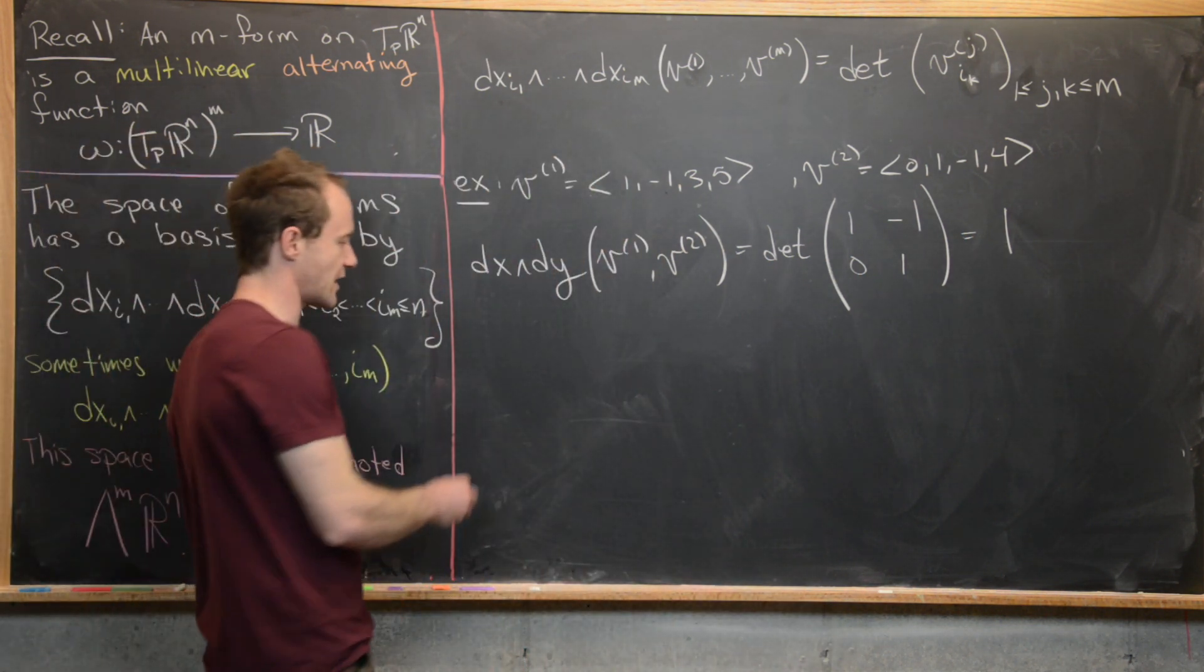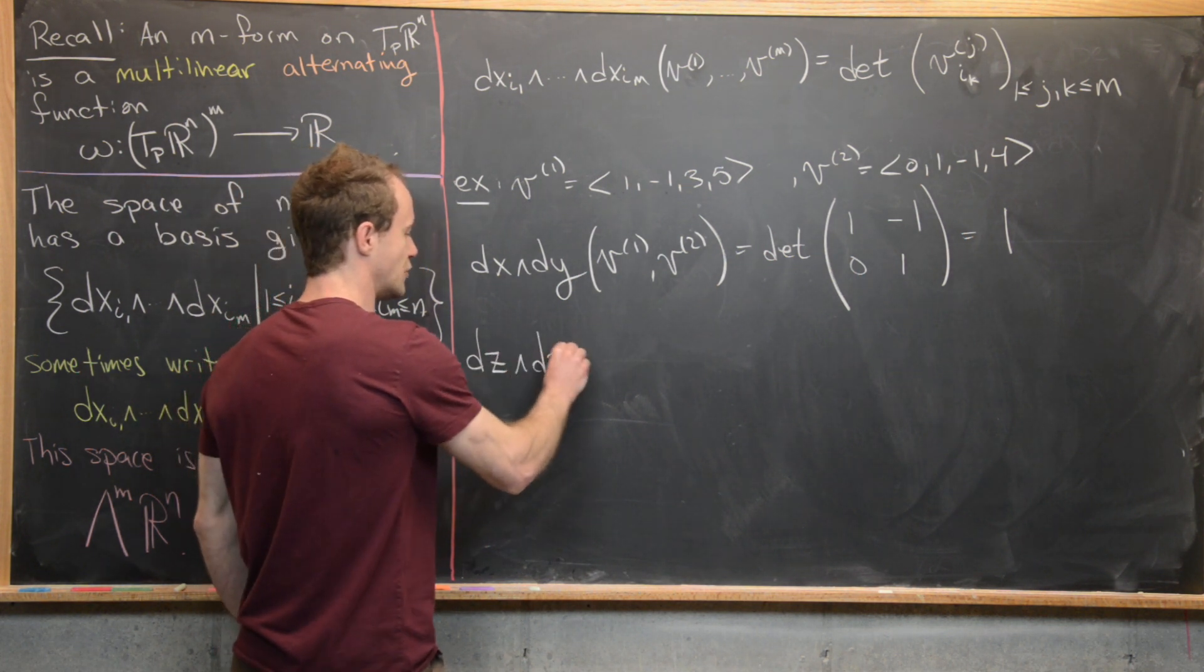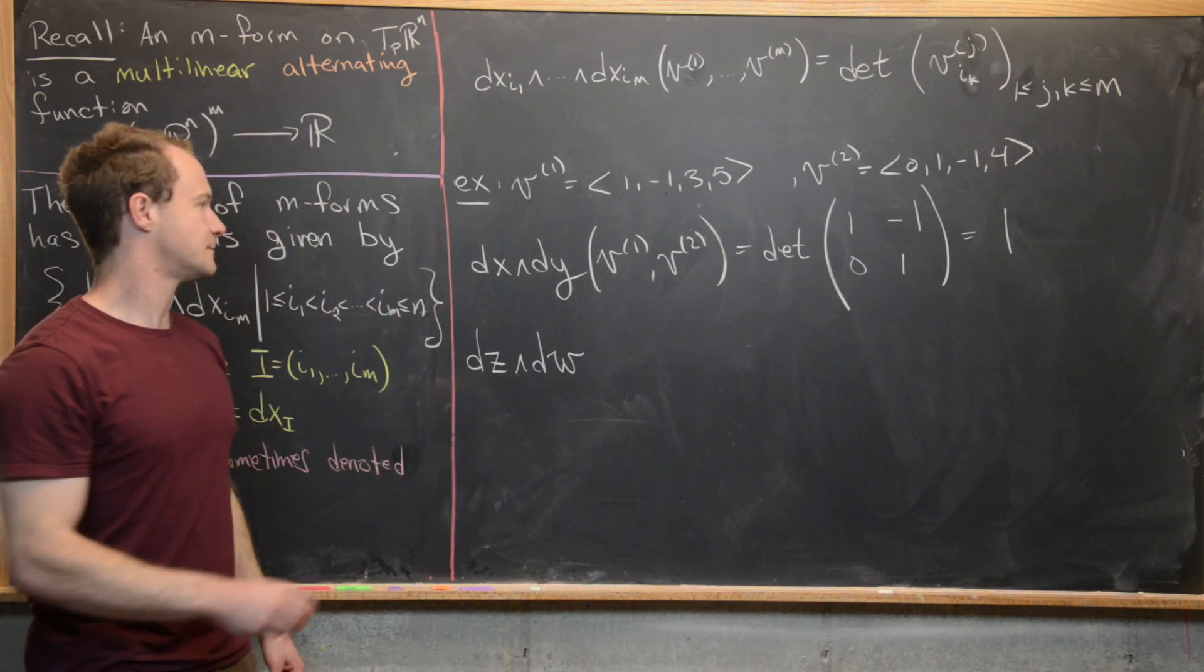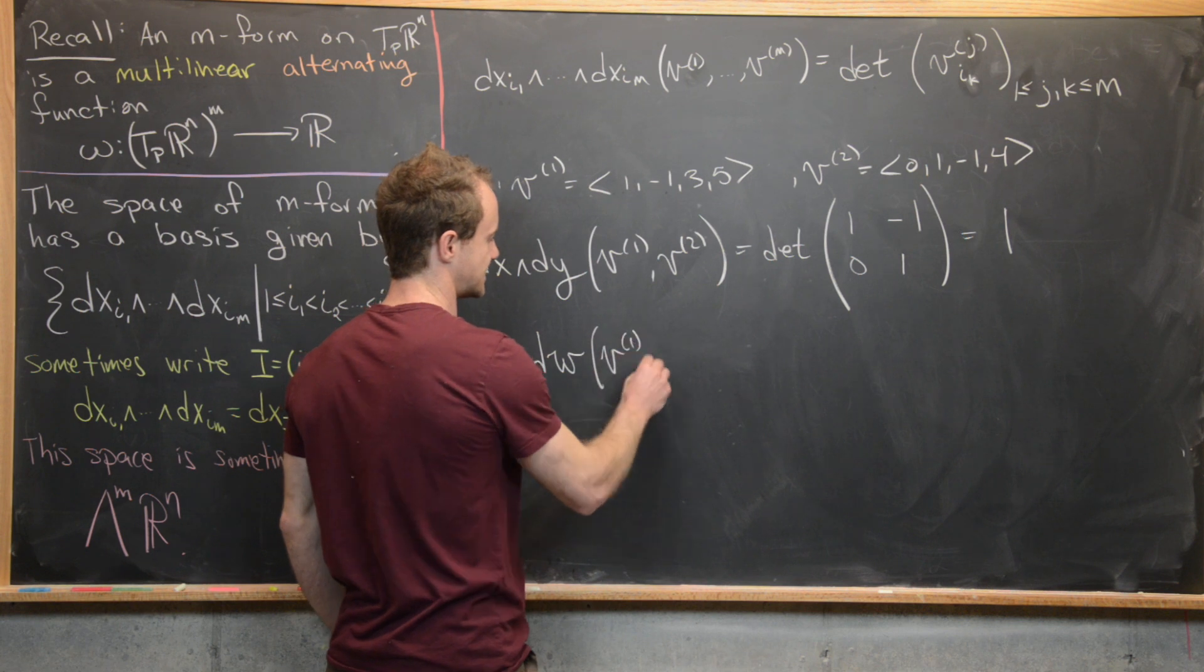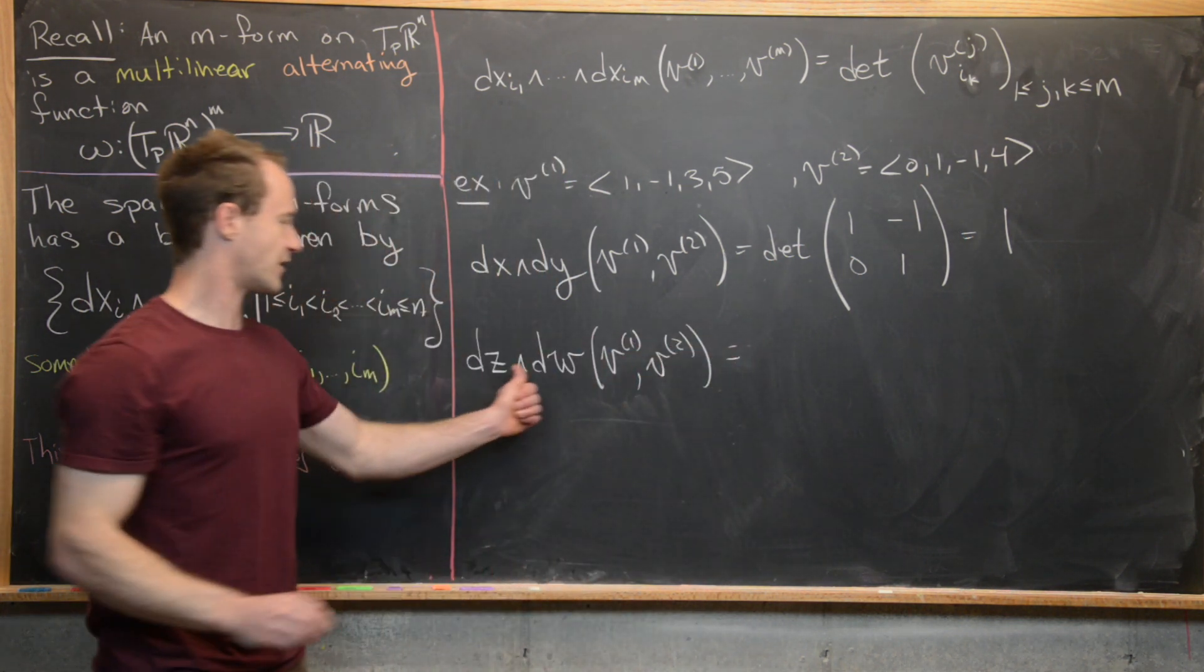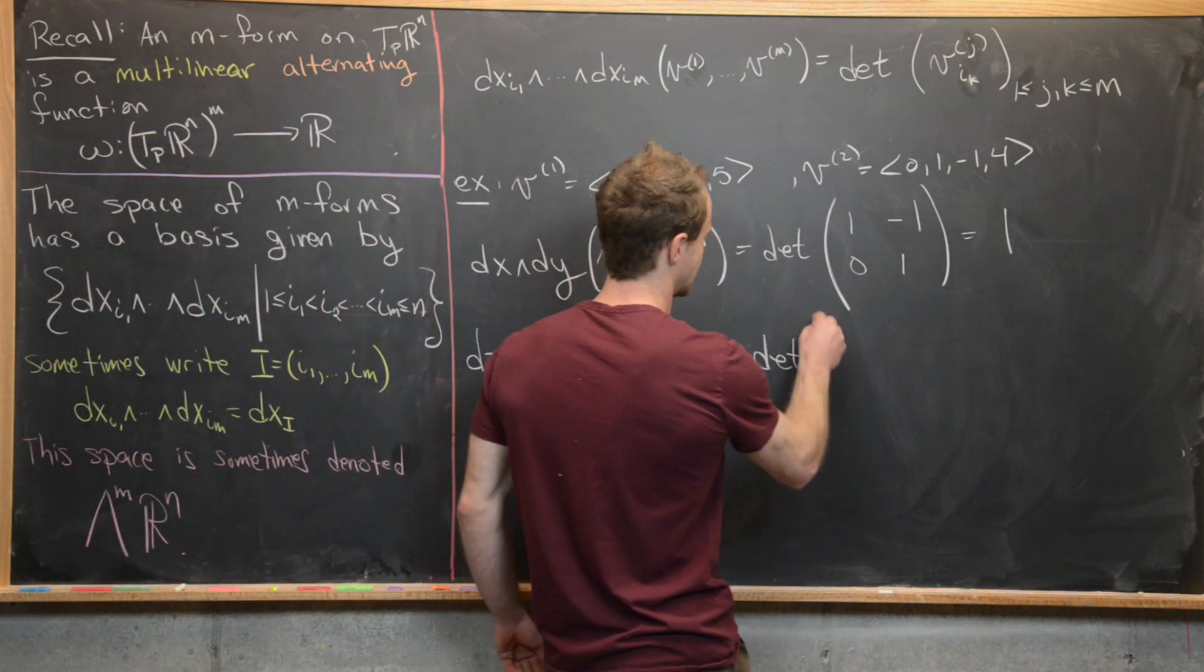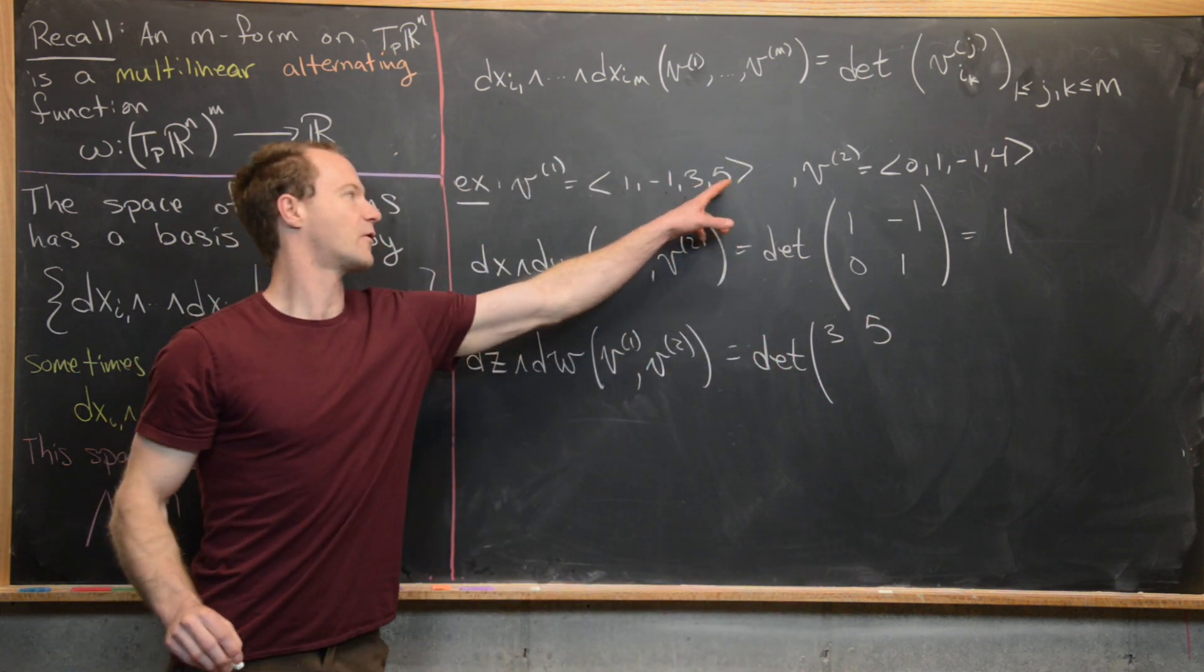So let's maybe do another one. Let's say we have DZ wedge DW, where we take W to be the fourth component. And so let's see what we get when we do this. So here we have V1 and V2. So that'll be the third and the fourth component from each of these vectors.